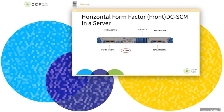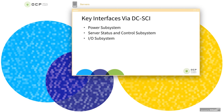This shows a horizontal form factor SCM in a typical 1U server. You can see some of the front accessible ports and LEDs on the SCM here. The key interfaces via the DCSEI can be broadly classified into three subsystems: the power subsystem, server status and control subsystem, and IO subsystem.